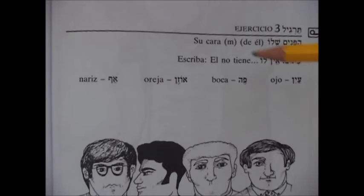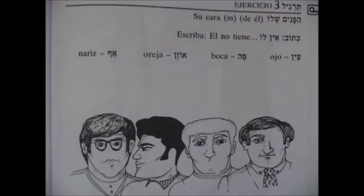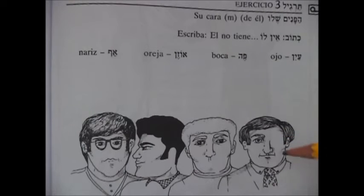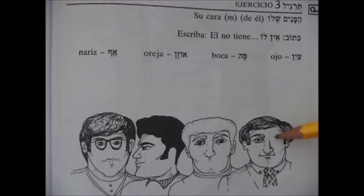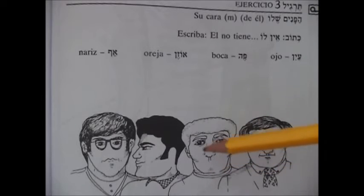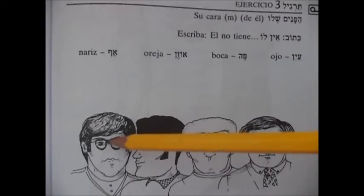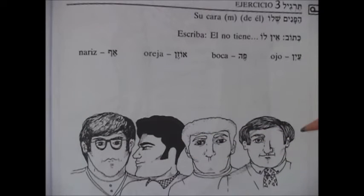Entonces nos dice: escriba lo que él no tiene. Vemos acá una temuná, una foto. Y vemos la Panim Shal Arba Nashim — la cara de cuatro personas, de cuatro hombres. A este le falta algo. A este otro le falta acá abajo algo. Al que sigue, cerca de su pedazo, le falta algo. A este también, aquí en medio de las gafas, le falta. Entonces en Ketibayat vamos a escribir qué le falta, y acá vemos que está escrito.